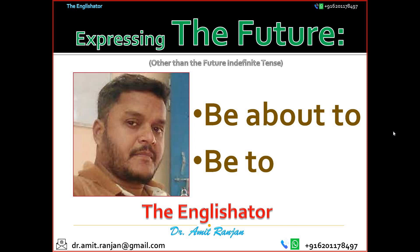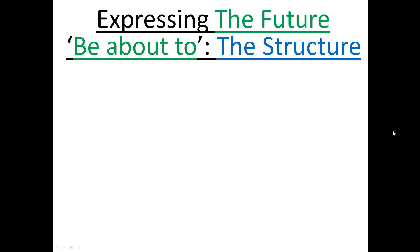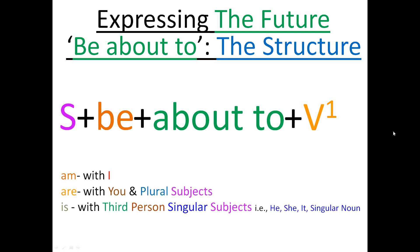So first of all, let's see how this phrase be about to is used in a sentence to express the future. You take a subject first, and then according to the number and the person of the subject, you take the appropriate form of the be verb in the present tense. And then to that you add the phrase about to, and after that you use the V1 form of a main verb. Additionally, you can use other words if required. So remember, subject plus be plus about to plus V1 plus additional words if required.